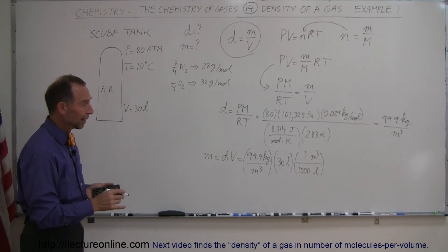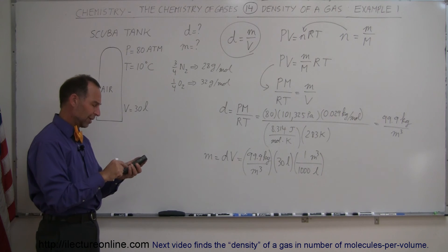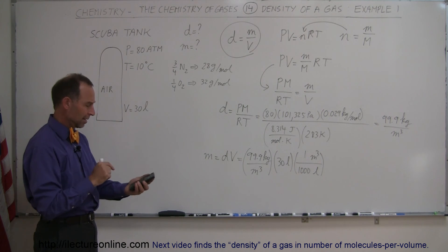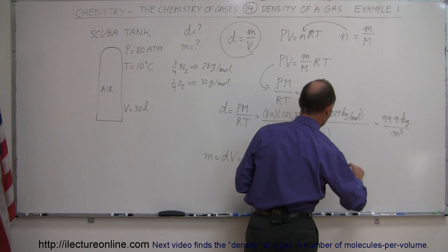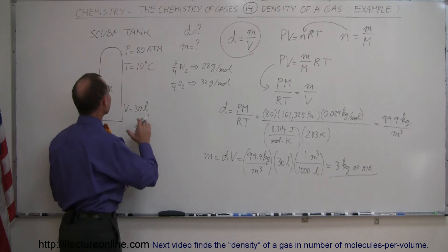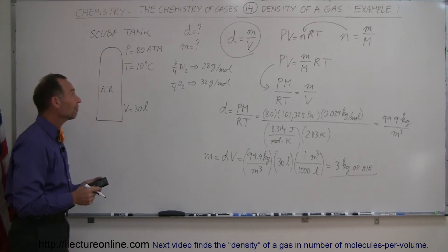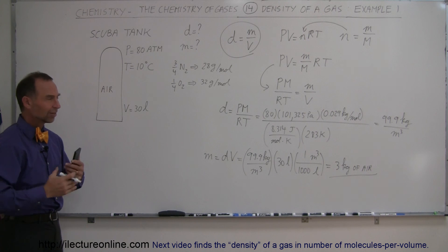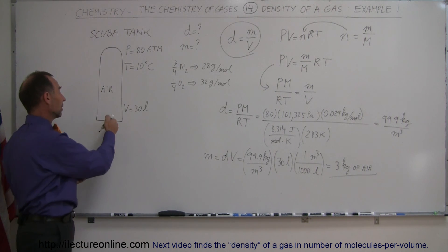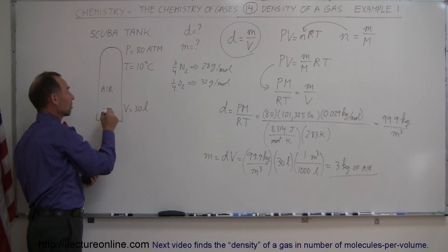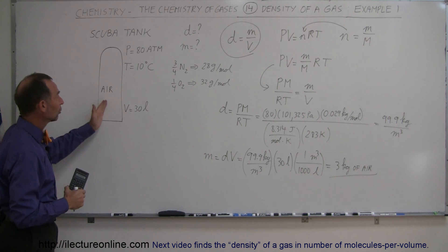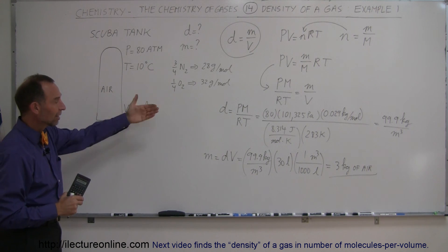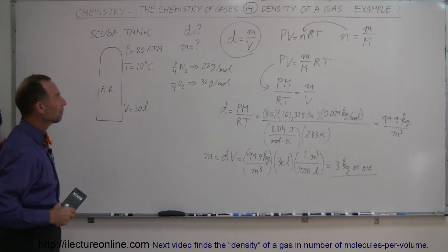Alright, so we take 99.9 divided by a thousand, multiply times 30. So divide by a thousand times 30 and we get 2.997, so that's about three kilograms of air, which is a little bit more than six pounds. So you put air into the scuba tank at 80 atmospheres, you have about six and a half pounds of air packed inside that scuba tank. So scuba tanks that are loaded up with air, they get to be quite heavy, not only because they use a very thick, strong metal to hold in that high pressure gas, the gas itself begins to weigh quite a bit once you load it up at very high pressure. So that's how we find the density and the mass of air inside a particular volume.